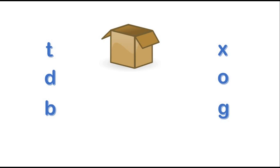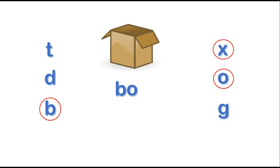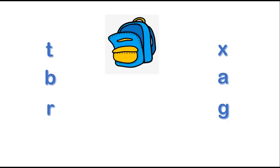What's this? It's a box. What's the first letter of the word box? B. O. X. B, O, X. What's the word? Box.